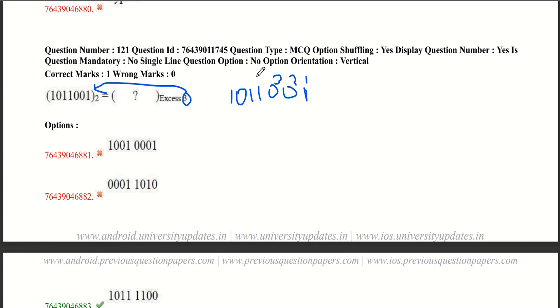This is what it is given. First we have to convert this into decimal. Let's convert it. 1, 2, 4, 8, 16, 32, 64. Let's add this. 1 plus 8 plus 16 plus 64. We will get 89.